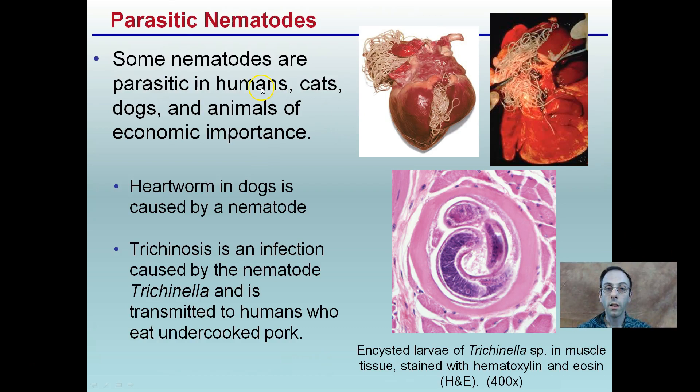Some nematodes are parasitic in humans, cats, dogs, and other animals, and this is why they're of economic importance. Heartworm in dogs is caused by nematodes — you can see all those parasites living inside here. Trichinosis is an infection caused by nematodes transmitted to humans who eat undercooked pork, shown here living inside muscle tissue. You might give your dog pills to prevent heartworm, and you want to avoid this at all costs — it is caused by parasitic nematodes.